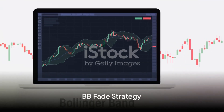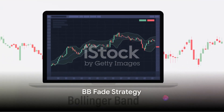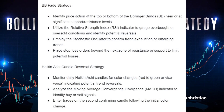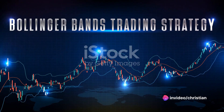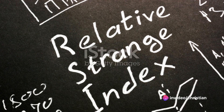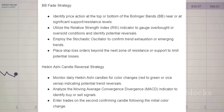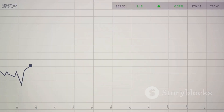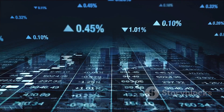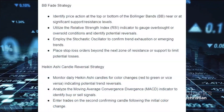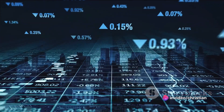Identify price action at the top or bottom of the Bollinger Bands near or at significant support and resistance levels. Utilize the Relative Strength Index (RSI) indicator to gauge overbought or oversold conditions and identify potential reversals. Employ the stochastic oscillator to confirm trend exhaustion or emerging trends.